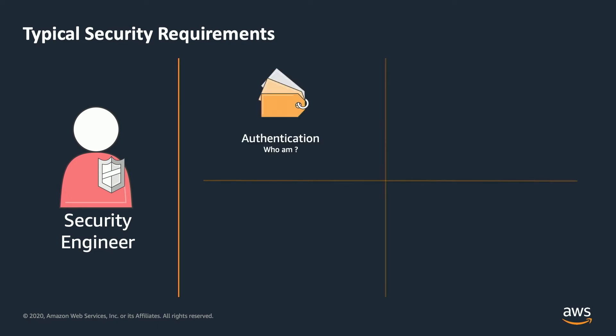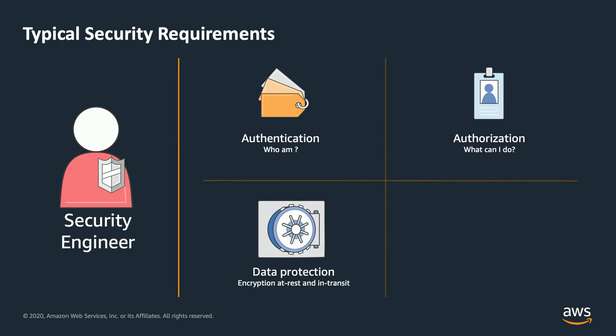When it comes to security, there are a few different requirements that customers or applications will need to meet. The first one is authentication — the process to prove that a user is who they say they are. We also have authorization, which are the controls for what particular resources a user can access. We also have data protection, which is the process of encrypting your data at rest as well as in transit. And lastly, we have network security — the controls for inbound and outbound access to your cluster resources.